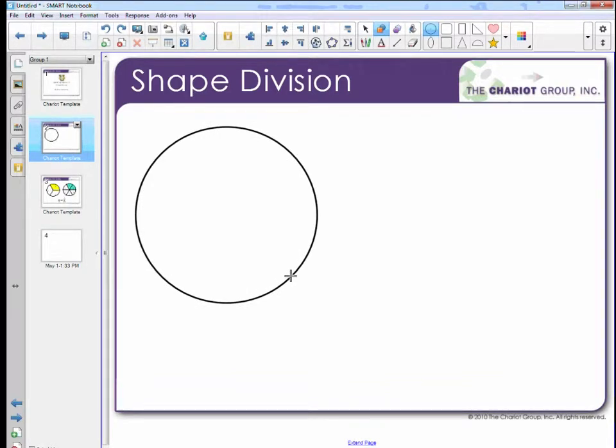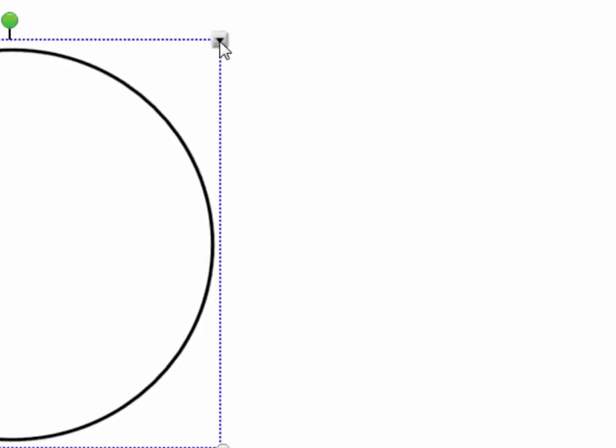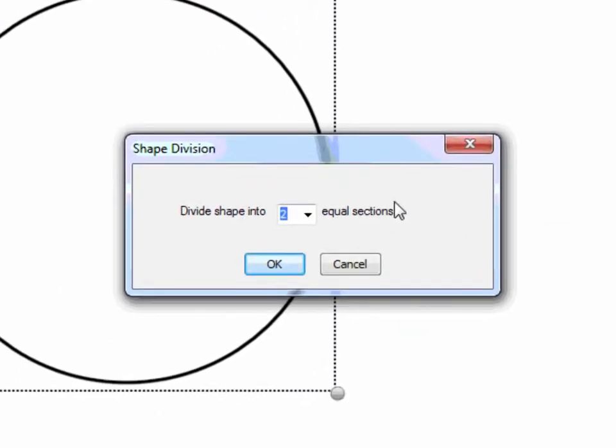Next I need to select the circle. By clicking on the line that will select my circle and then once selected I'm going to click on the drop-down box on the top right hand corner. In there I'm going to come down to divide shape. That'll bring up the shape division dialog box.